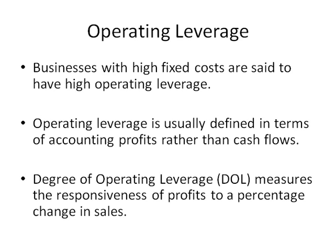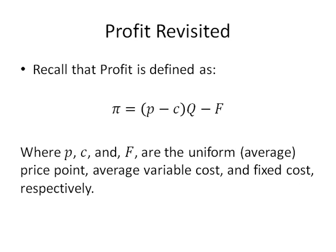So before we get into defining the degree of operating leverage, let's first look at our calculation of profit. Just recall that profit is defined as the price cost margin, that's P minus C, times the quantity units sold minus the fixed cost. And we've assumed here that P and C are constant and that F, by definition, is a fixed cost, so that does not change when Q changes.